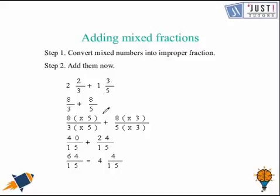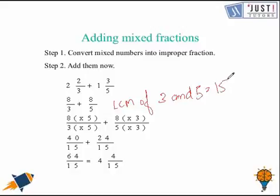These are unlike fractions, so we find the LCM of 3 and 5, which is 15. We convert both fractions: 8 over 3 becomes 8 times 5 over 3 times 5, giving 40 over 15. And 8 over 5 becomes 8 times 3 over 5 times 3, giving 24 over 15.